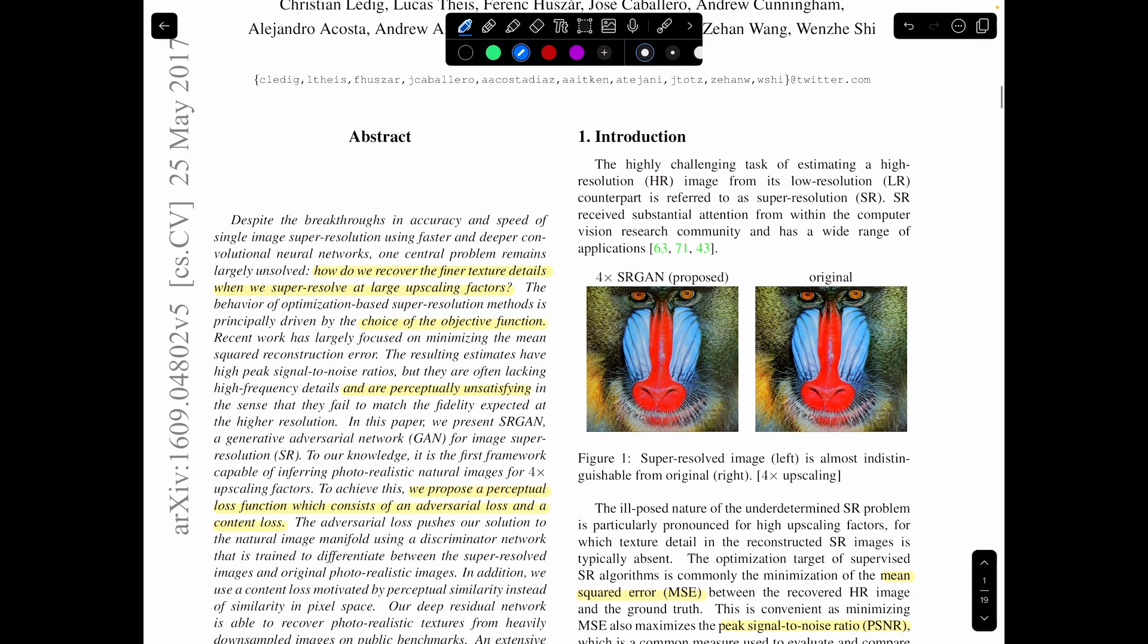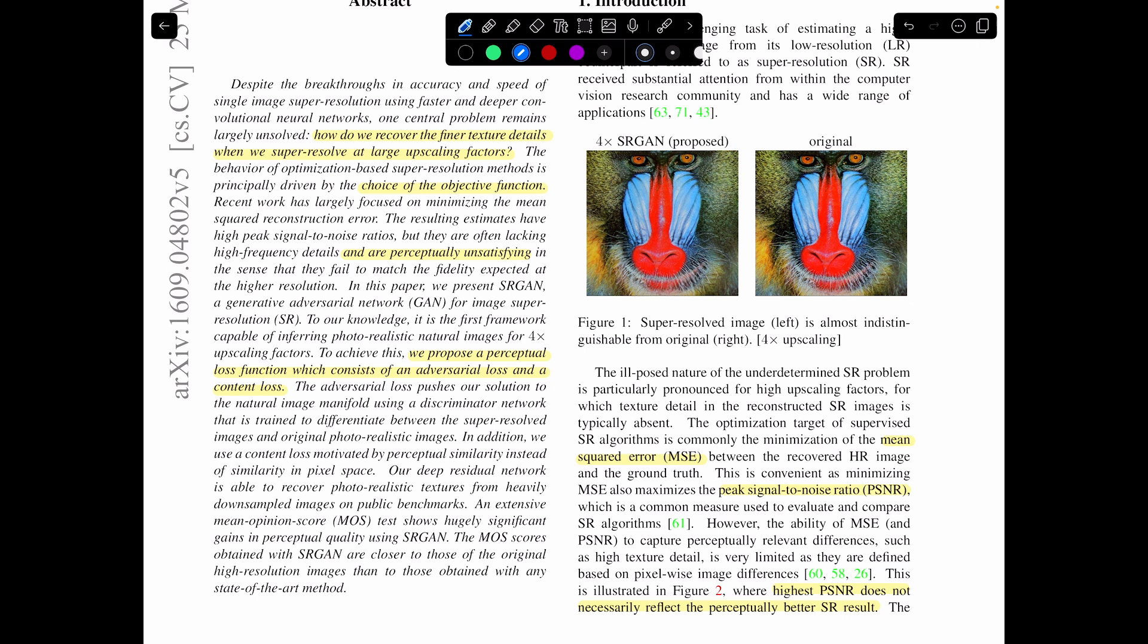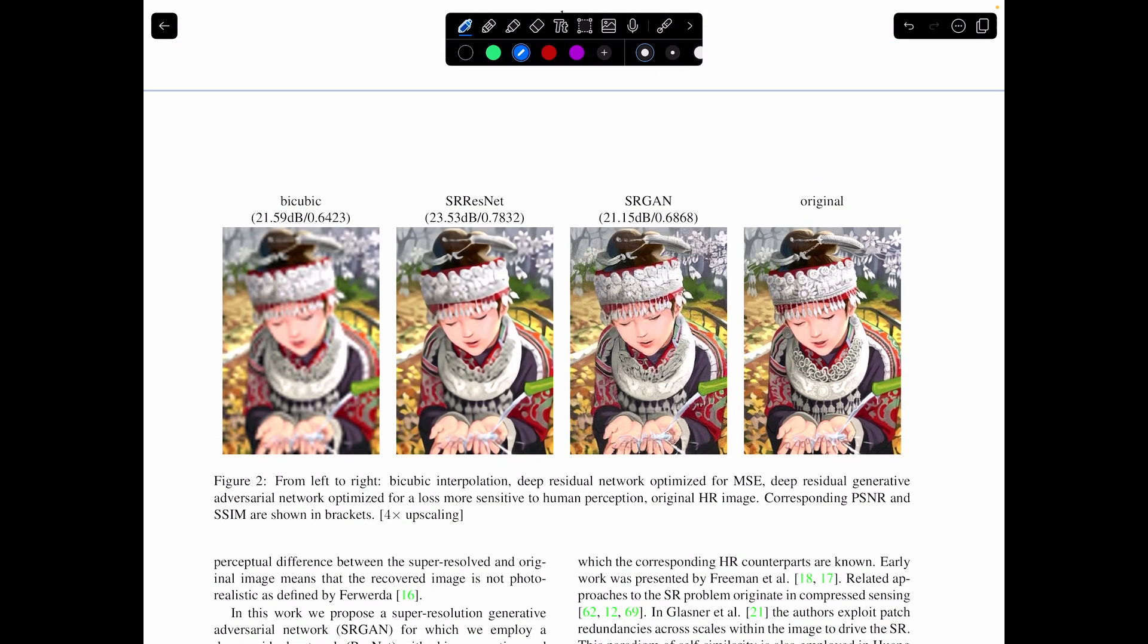Alright, so let's get into it. The authors state their goal here, which is how do we recover finer texture details when we super-resolve large upscaling factors? So as you can see in this figure, when you take a blurry image and you try to upscale it at a high resolution, the existing methods, such as bicubic interpolation, which is essentially pixel averaging, doesn't really cut it. It creates a really blurry image.